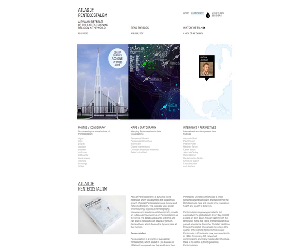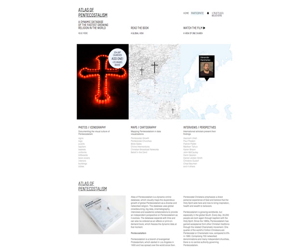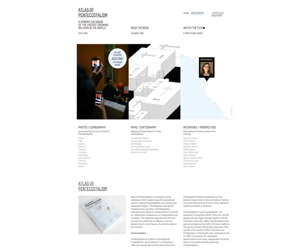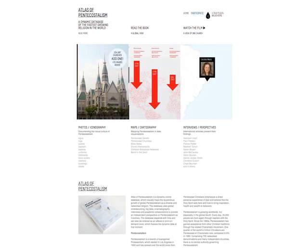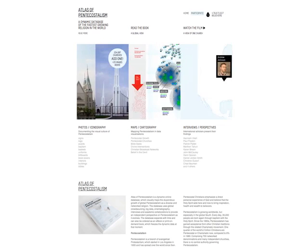The Atlas of Pentecostalism is a dynamic online database which visually maps the growth of global Pentecostalism as a diverse and networked religion. The database uses global crowdsourcing, big data, cinematography, interviews and academic collaborations to provide an independent perspective on Pentecostalism as it evolves. The database expands with time and can also be ordered as an e-book or print-on-demand book which freezes the dynamic data at that moment.